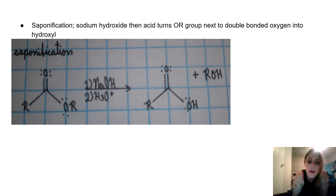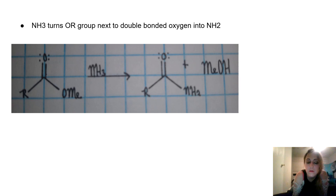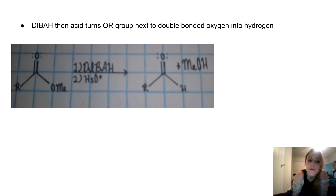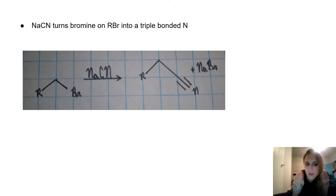Saponification: sodium hydroxide then acid turns an OR group next to a double-bonded oxygen into a hydroxyl. NH3 turns an OR group next to a double-bonded oxygen into NH2. DIBAL then acid turns an OR group next to a double-bonded oxygen into a hydrogen plus methanol. Sodium cyanide turns the bromine on an alkyl bromide (RBr) into a triple-bonded nitrogen (nitrile) plus sodium bromide.